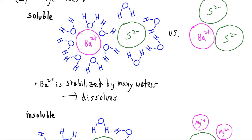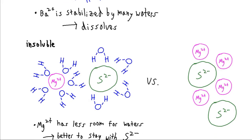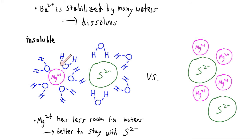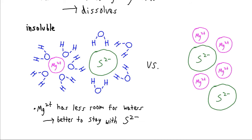But if we look at the group barium is in — the alkaline earth metals — magnesium is very similar to barium, but it's smaller. Because it's smaller, we're able to fit fewer water molecules around it, which decreases the benefit of going into the aqueous phase. In fact, it decreases it enough that magnesium sulfide tends to be relatively insoluble. It's better to stay in solid form and benefit from the S²⁻ charges than to go into the aqueous form where only a few water molecules help neutralize the 2+ charge.